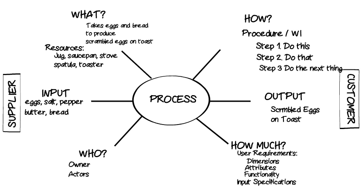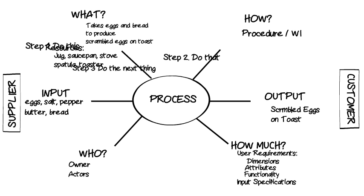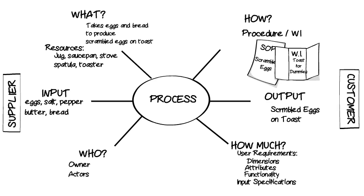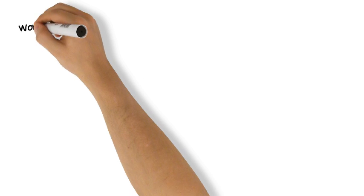The how leg of the turtle contains the procedure steps for transforming inputs into outputs. These steps can be written in a separate document such as a standard operating procedure or work instruction, which is simply referenced from the how leg of your turtle, along with secondary procedures such as how to conduct verification and validation testing. The procedure or work instruction in the how leg of the turtle can be rendered as a workflow diagram or flowchart.